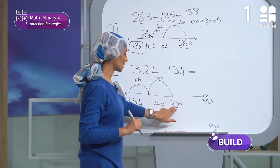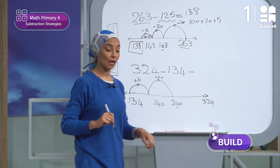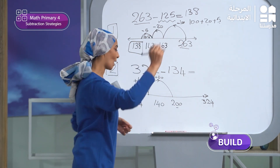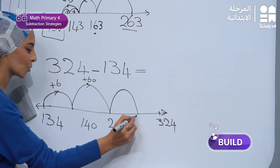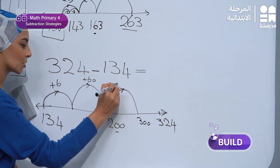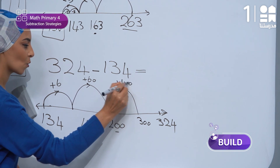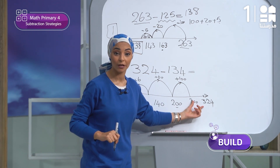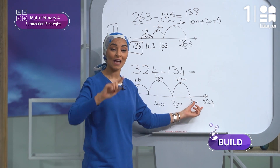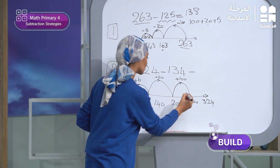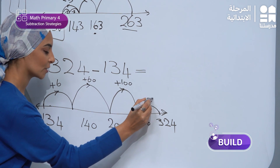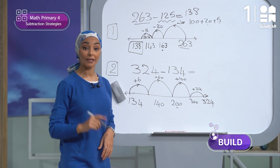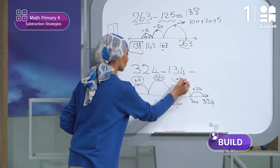From 200 to 300, what should I do? I will jump another 100 to reach 300. So this is plus 100. Then I have 300 and I want to reach 324, so I will jump only 24 to reach 324.